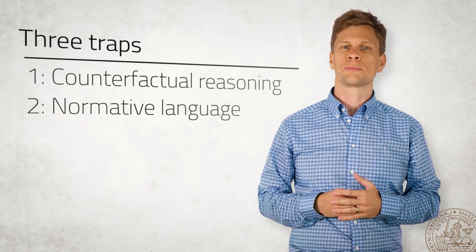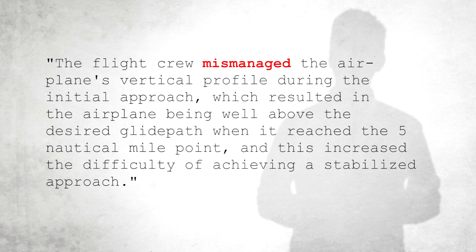We can read in the report that the flight crew mismanaged the airplane's vertical profile during the initial approach, which resulted in the airplane being well above the desired glide path when it reached the five nautical mile point, and this increased the difficulty of achieving a stabilized approach.